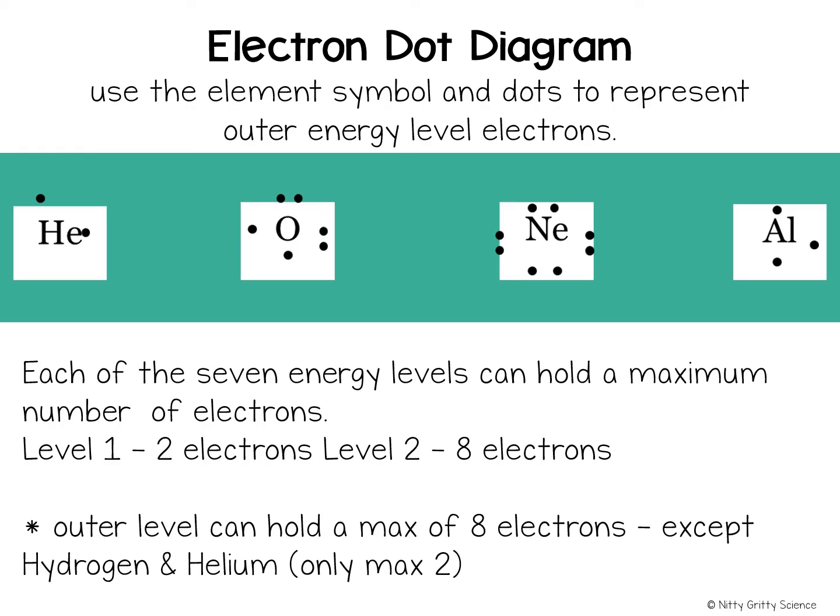The outer electrons of an element are so important in determining its chemical properties that an American chemist by the name of Lewis created a method to represent the outer electrons. An electron dot diagram uses the symbol of the element and has dots to represent the electrons in the outer energy level. Notice the electron dot diagram on the slides.